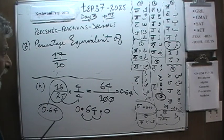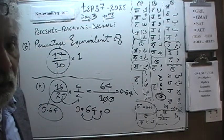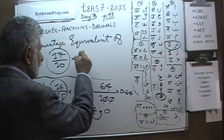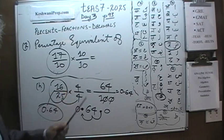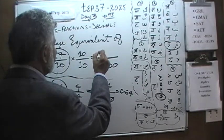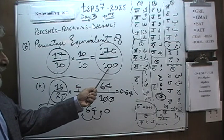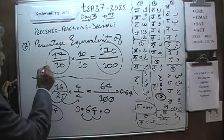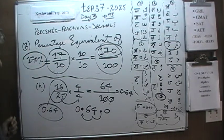We are going to take this quantity and multiply it by a magic one — 10 over 10. 10 over 10 is 1. Now 10 times 10 in the bottom gives us 100. And on the top we have 17 times 10 which is 170. Any quantity divided by 100 — that's what the percentage is. In other words, 17 over 10 is simply 170%.